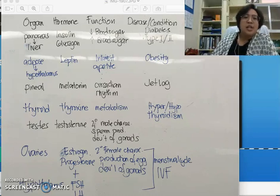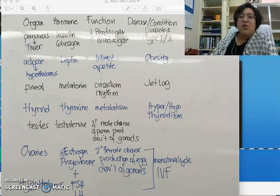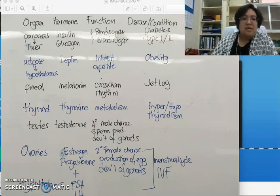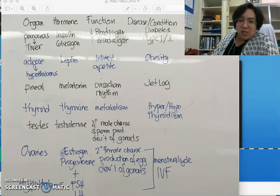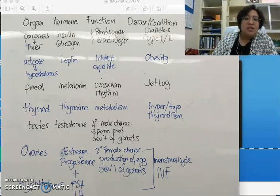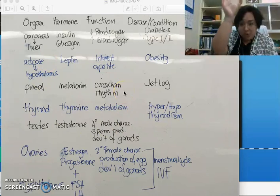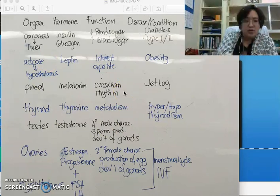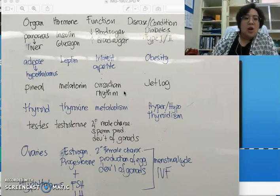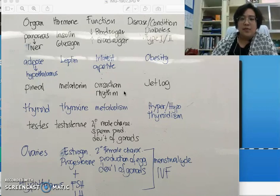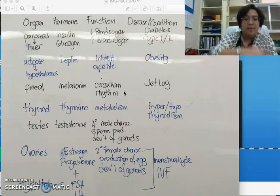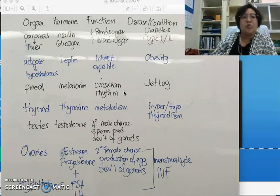Just a disclaimer: there are many other hormones in the endocrine system, but in IB, these are the ones that you need to know. I've listed and organized all of the hormones you need to know and the function of each. Let's look at the list quickly, and then I'll focus on the diseases that are hard to understand and you need to remember.